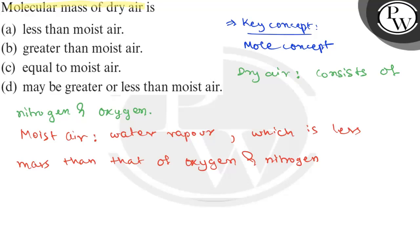Making the mass of moist air less than dry air. Because if you see the molar mass of dry air, it is actually near to 28.9 grams.